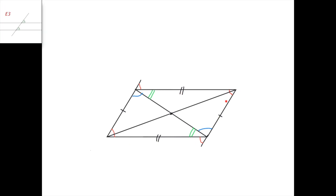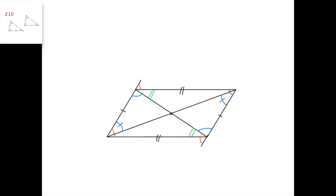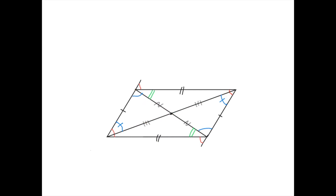Now I'm going to mark that this angle here equals this angle here, again from the parallel lines. And now see what we've got: another pair of congruent triangles — this triangle here and this triangle here. They have that this side equals this side, and they also have the same angles: this angle equals this angle, and this angle equals this angle. And so they are congruent, so we can mark this side equals this side, and this side equals this side.